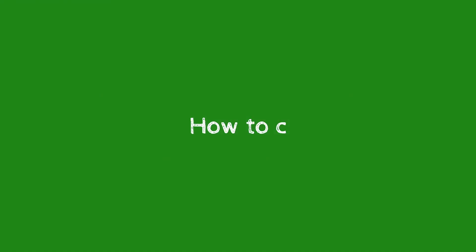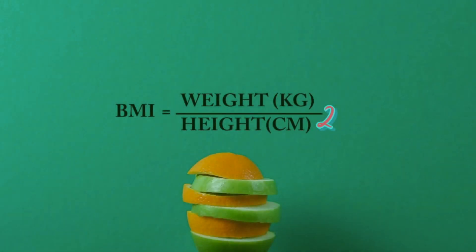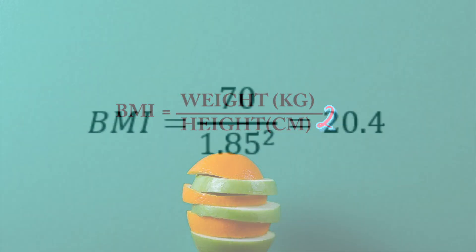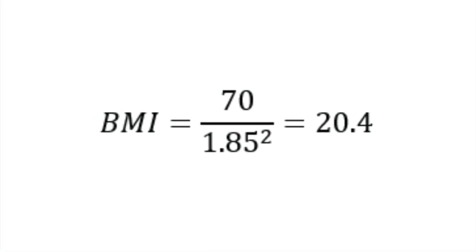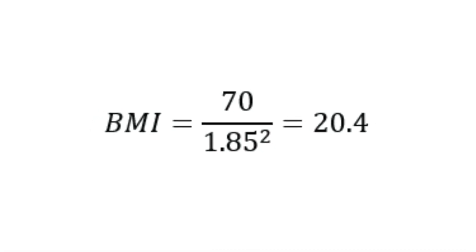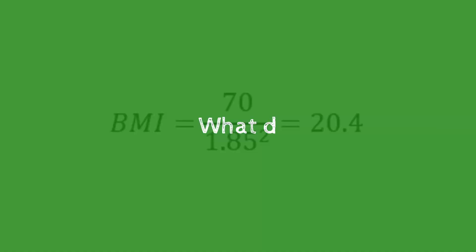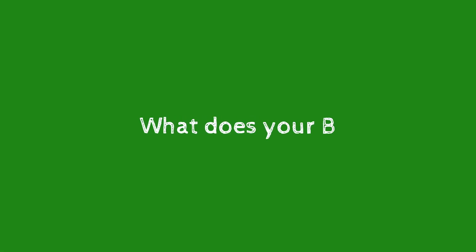How to calculate your BMI: it's easy — simply divide your weight in kilograms by your height in meters squared. For instance, if your weight is 70 kilograms and you are 185 centimeters tall, your BMI calculation will look like this.